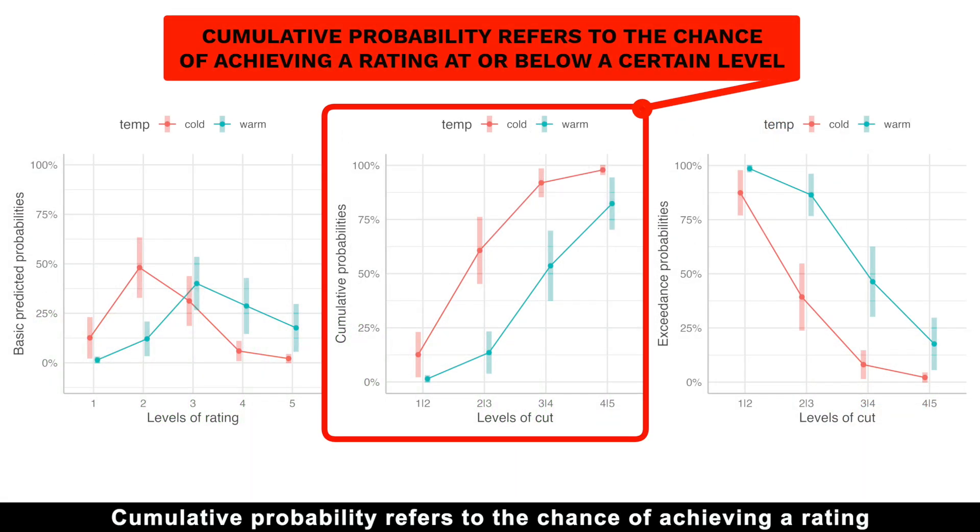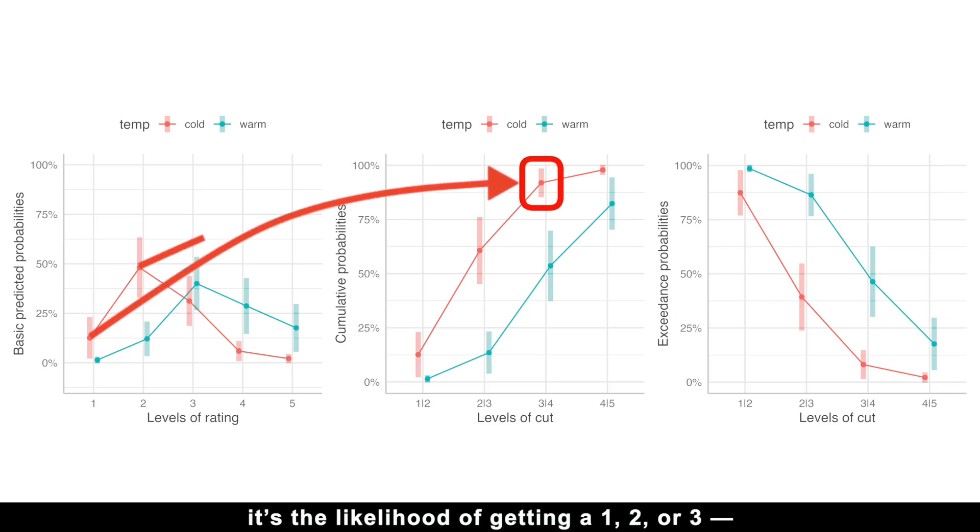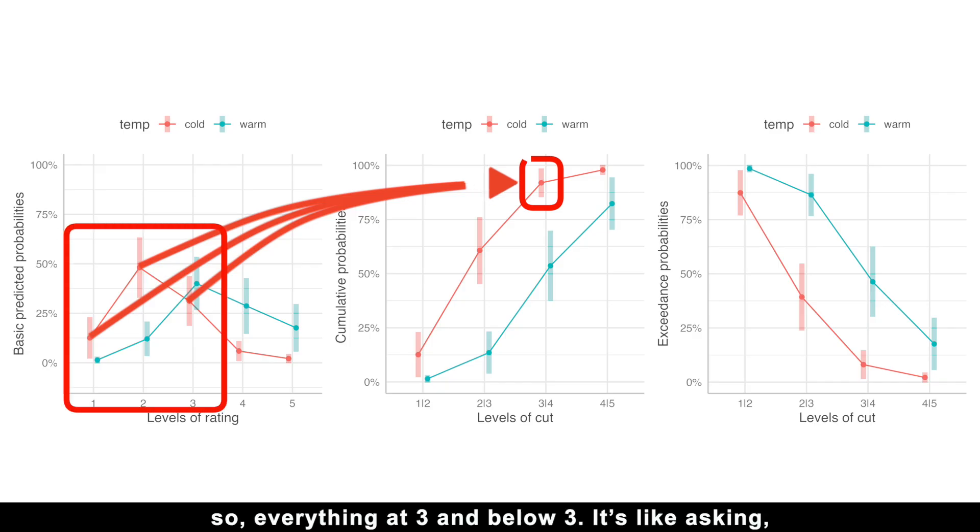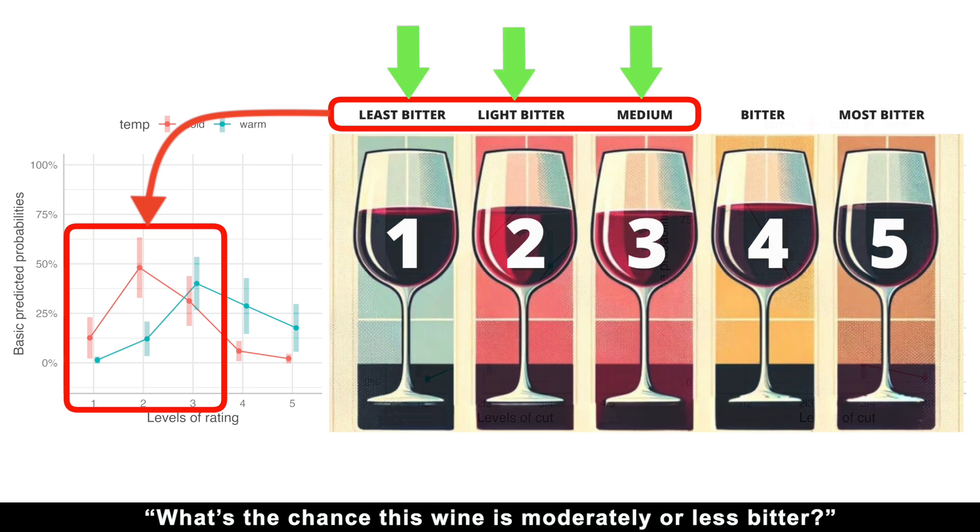Cumulative probability refers to the chance of achieving a rating at or below a certain level. For example, for a wine rated 3, it's the likelihood of getting a 1, 2, or 3—so everything at 3 and below 3. It's like asking what's the chance this wine is moderately or less bitter.